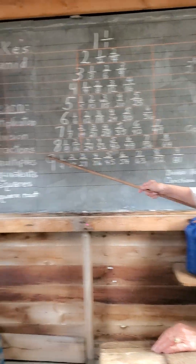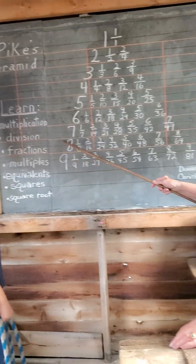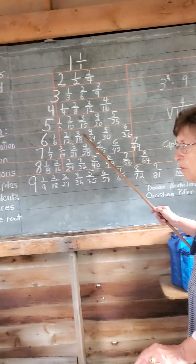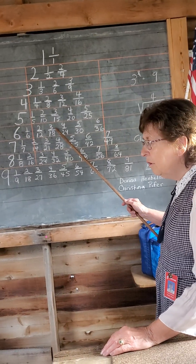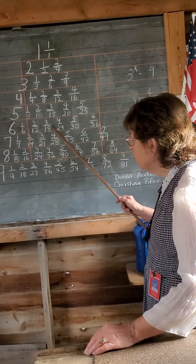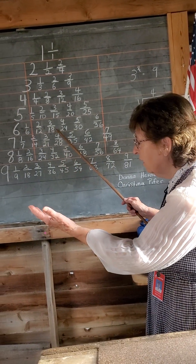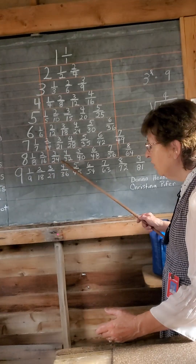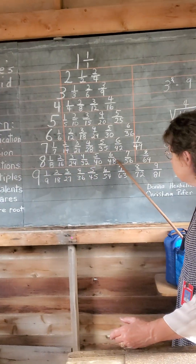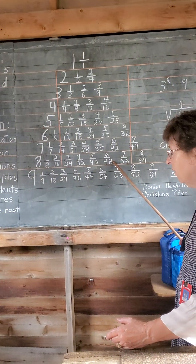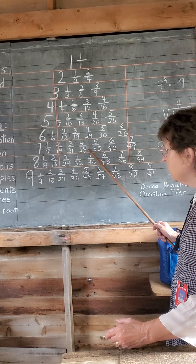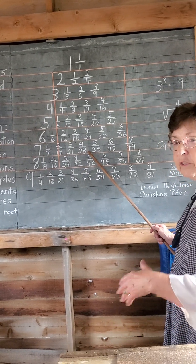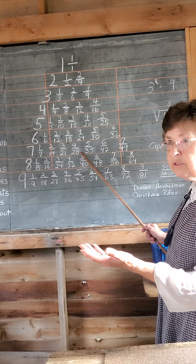Multiplication. Any significant number on the outside, multiplied times any top number, the answer's directly below. So let's test it. Six times three is? Eighteen. Eight times three is? Eight times six is? Seven times four is? Okay, that's your multiplication.